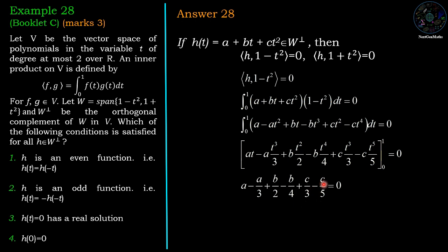Now after the simplification, we have equation 40a plus 15b plus 8c equals 0.